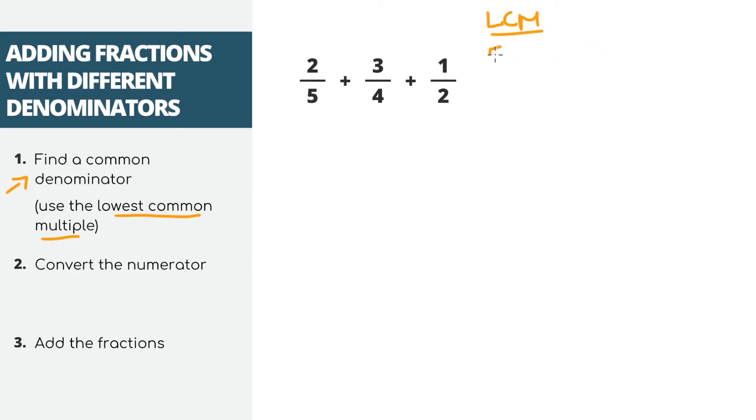So for 5, your multiples are 5, 10, 15, 20, etc. These are multiples because 5 times 1 is 5, 5 times 2 is 10, 5 times 3 is 15, 5 times 4 is 20, etc.